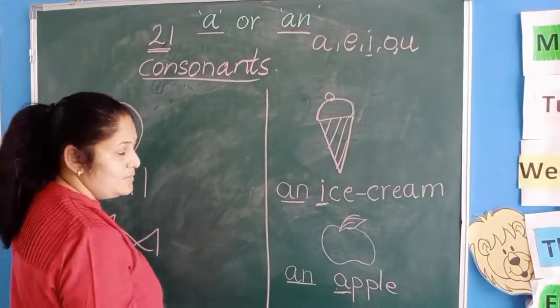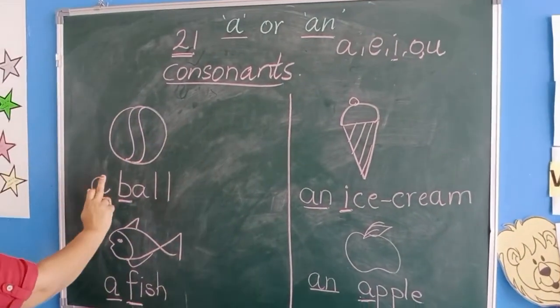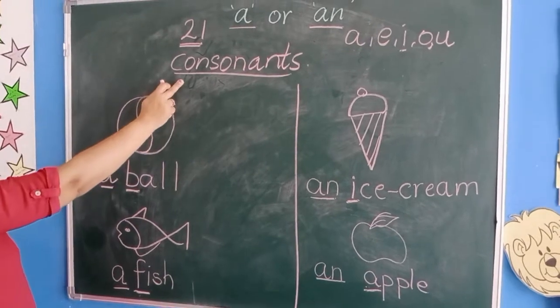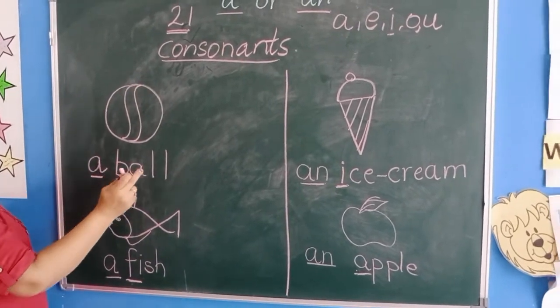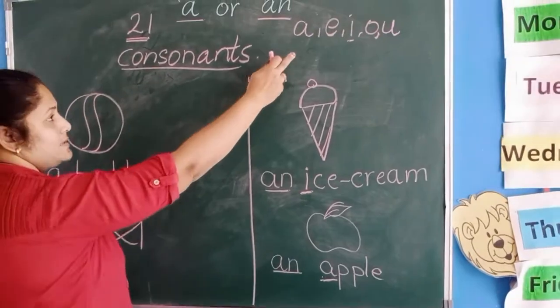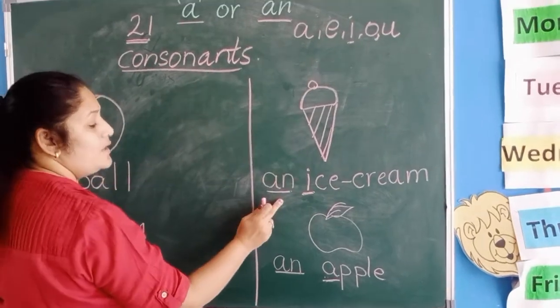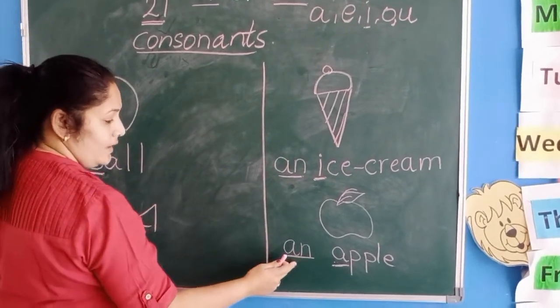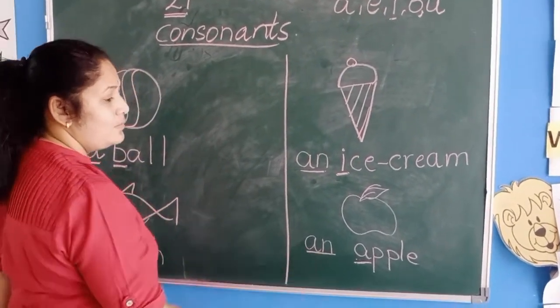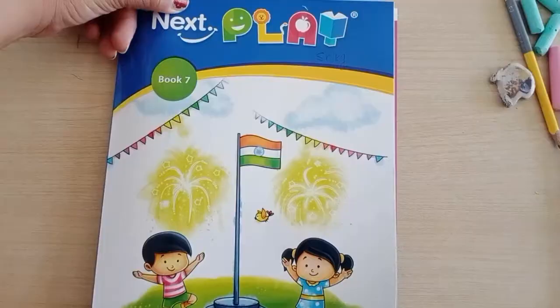Understood? When the word starts with a consonant, we use A. And when the word starts with a vowel, we use AN. Okay? We will see some more examples in the book.